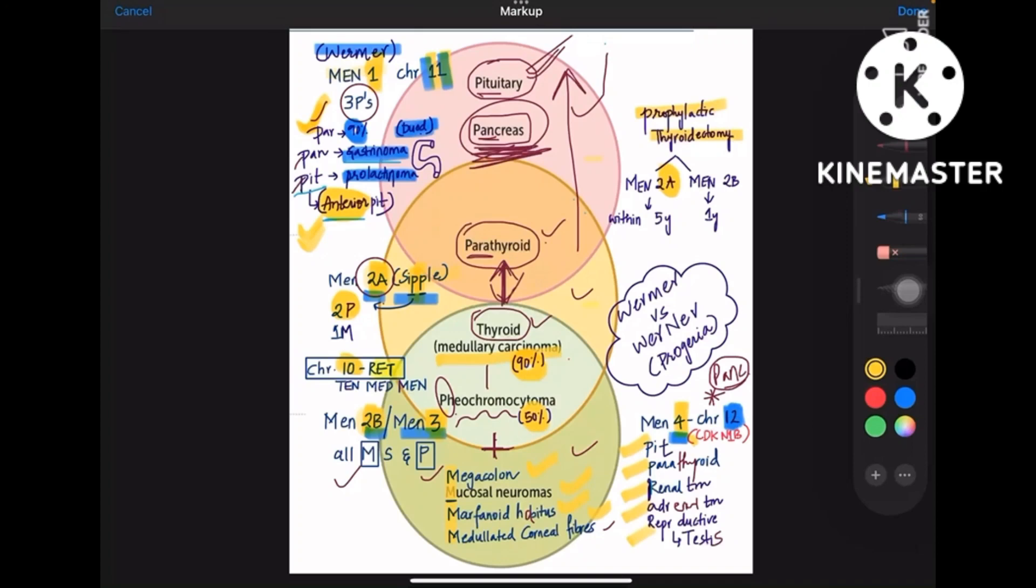So when a person is suspected of MEN syndrome, if it is MEN2A then prophylactic thyroidectomy should be done within five years. If it is MEN2B then it should be done within one year because of the risk of medullary carcinoma of thyroid.